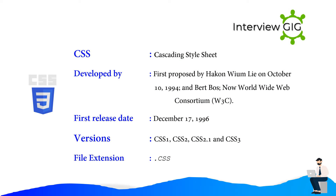CSS — Cascading Style Sheet — was first proposed by Håkon Wium Lie on October 10th, 1994, and Bert Bos. Now maintained by the World Wide Web Consortium, W3C. First release date: December 17th, 1996. Versions: CSS 1, CSS 2, CSS 2.1, and CSS 3. File extension: .css.